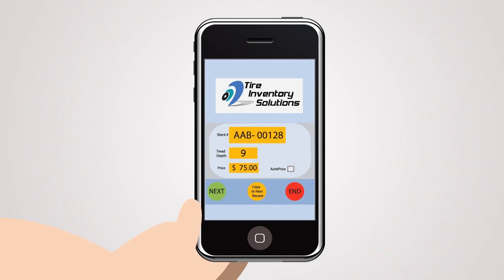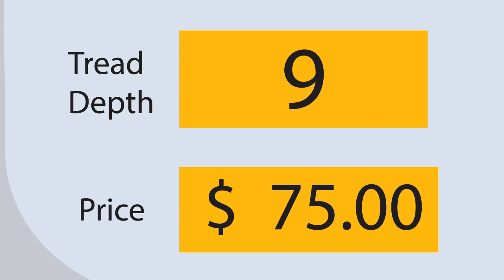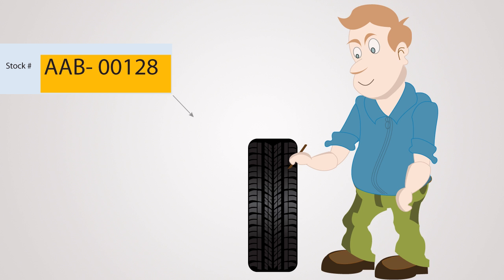Take a tread depth measurement of your tire and enter it along with the price. You can also choose the auto price feature which will automatically price your tire to market. Mark the stock number on the tire. It's now ready for sale.